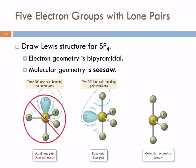We're about five electron groups with lone pairs. Draw the Lewis structure for SF4. Four fluorines times seven is 28. Sulfur has six, that's 34. I need to stick two more electrons on there. Can I put them on the sulfur? Can sulfur do an expanded octet? Yeah, it's a period three element. It can do that. So there's a lone pair here.